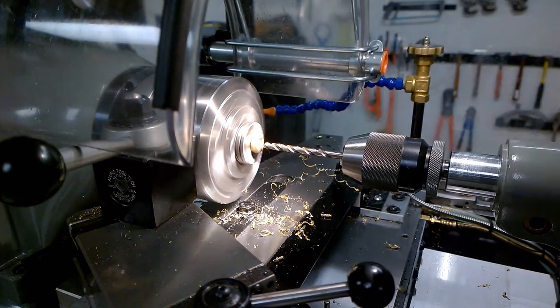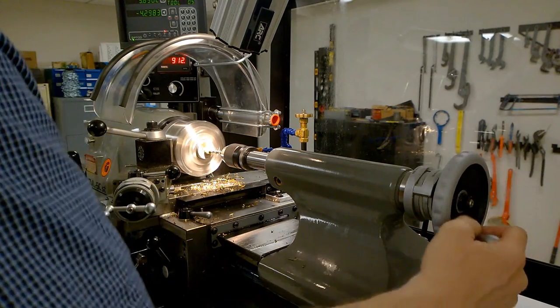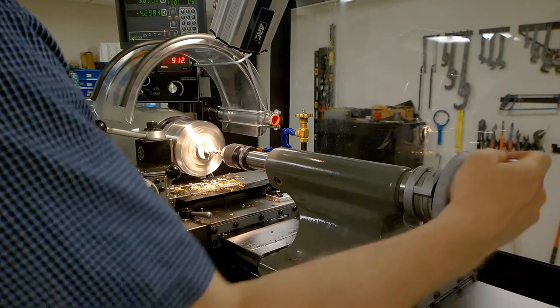I clear the chips from the drill using a brush soaked in cutting fluid. The red number on the digital readout indicates that the lathe is running at about 912 RPM, which is a good conservative speed for this operation.